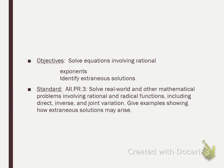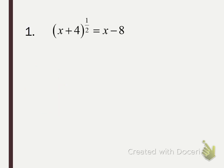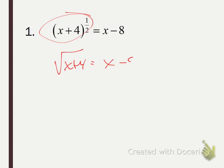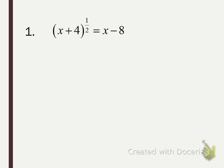Let's dive in. We want to solve equations involving rational exponents and still talk about extraneous solutions. We have an x on the left attached to a one-half exponent, and an x on the right. We could rewrite this in radical form as the square root of x plus 4 equals x minus 8 and solve like last homework, or since this is a square root we can cut out the middleman and just go straight to squaring both sides.